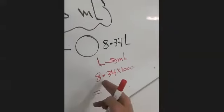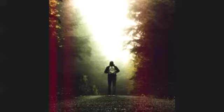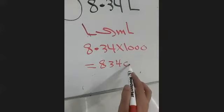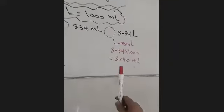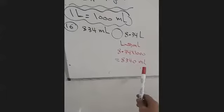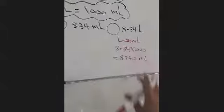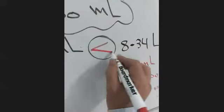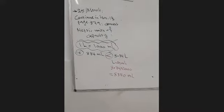We push the decimal to the right three digits. The answer will be 8,340 milliliters. Now let's compare: we have 8,340 milliliters and 834 milliliters. Which one is bigger? 8,340 is bigger. So this one is greater — the sign goes this way. This is question 16, page 879.